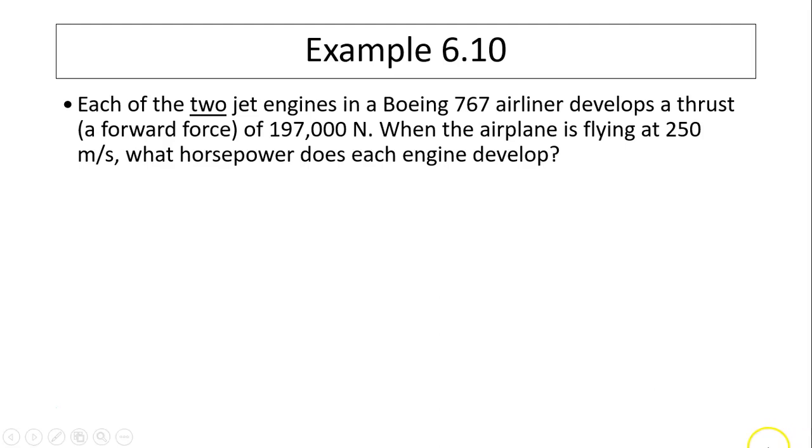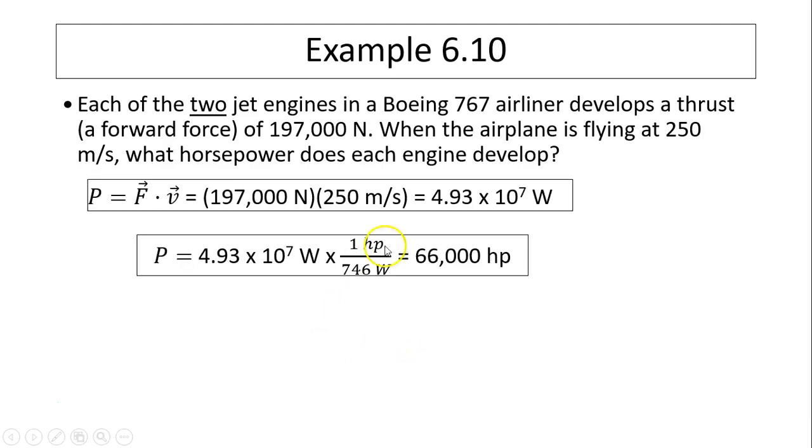Horsepower is the power. So to find power, we use force times velocity. That will give us watts. To convert watts into horsepower, we times by one. And this one has to be one horsepower divided by 746 watts. This way watts and watts cancel. We have horsepower left. So it's 66,000 horsepower.